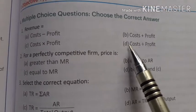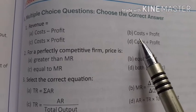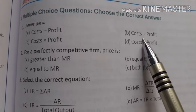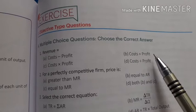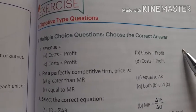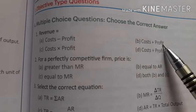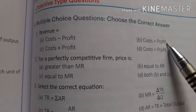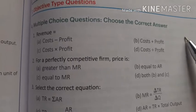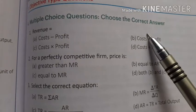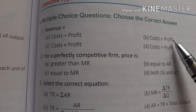The right answer is B: revenue is equal to cost plus profit. Revenue includes both cost and profit. If we exclude cost from revenue, we get profit. So profit equals revenue minus cost. B is the correct answer.